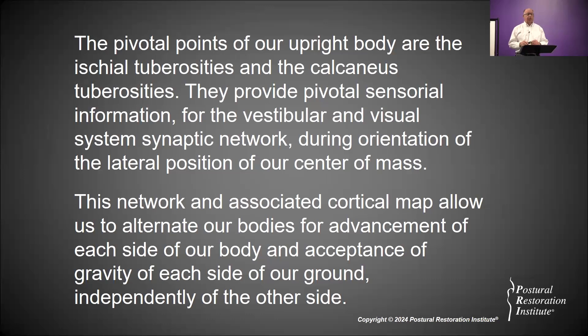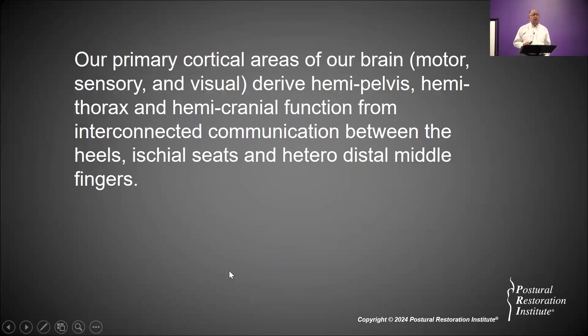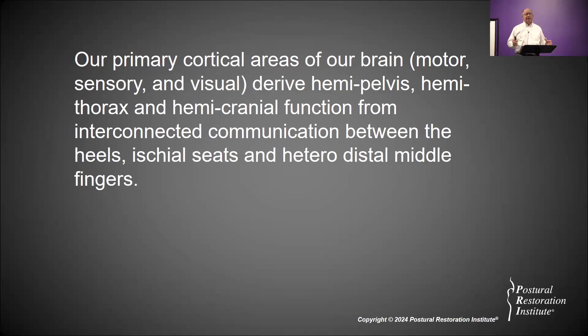This network and associated cortical map allow us to alternate our bodies for advancement of each side and acceptance of gravity from each side of our ground. Each side of our body and each side of our ground communicate through these two sites independently, and dangerous situations occur when they are not independent of each other. Our primary cortical areas — motor, sensory, and visual — are derived from hemipelvis, hemithorax, and hemicranial function through the interconnected communication between the heels, ischial seats, and heterodistal middle fingers.